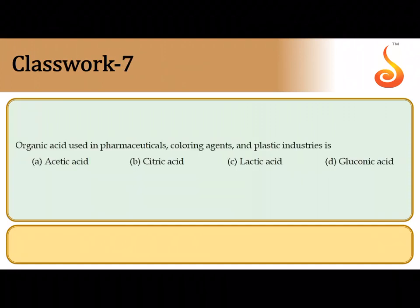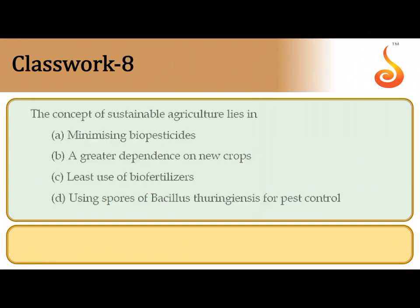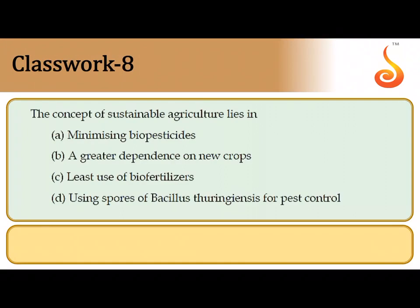The seventh question says the organic acid used in pharmaceuticals, coloring agents, and plastic industries is acetic acid. Acetobacter aceti is the source of acetic acid that is extracted on an industrial scale.